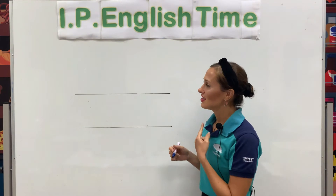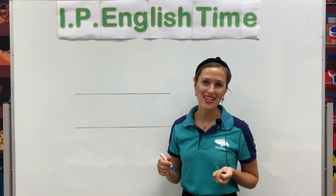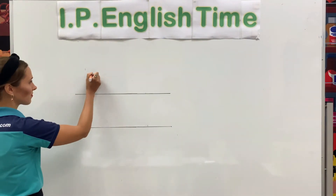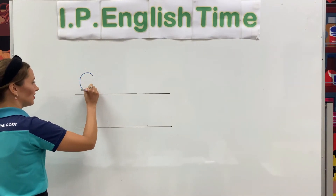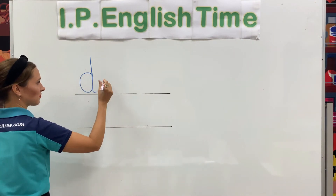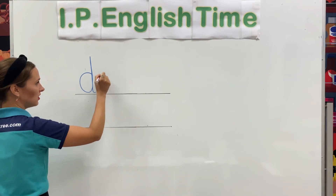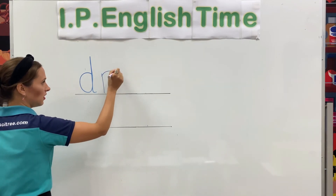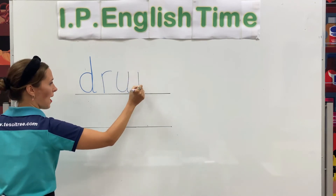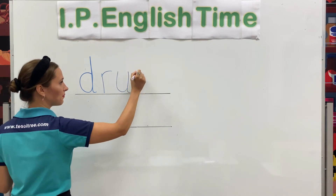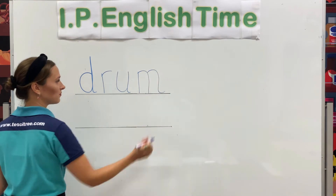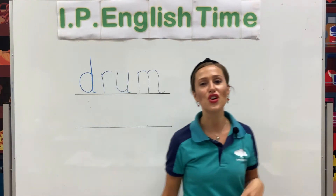Drum starts with letter D. D, D, D, R, U, M. Drum.